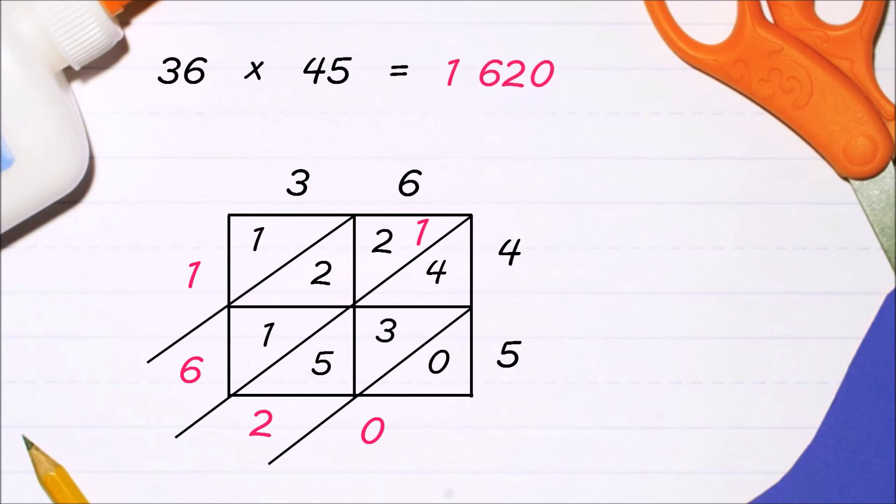Therefore, the product of 36 and 45 is 1620.